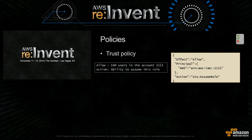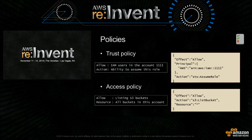Let's look at what permissions or policies you can set on roles. There are two. The first one is what we call a trust policy, and trust policy defines what are the trusted entities for this role. If you look at the sample policy, what it says is that this role is going to allow access to any user in account 1111. The other type of policy you can set on the role is called access policy, and these are the permissions that are granted to anyone that assumes this role.